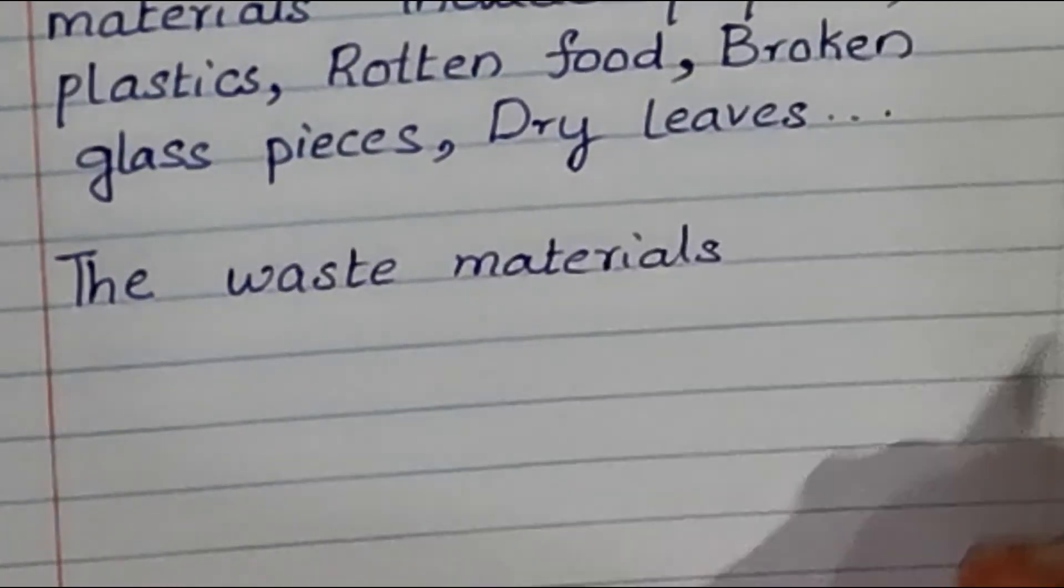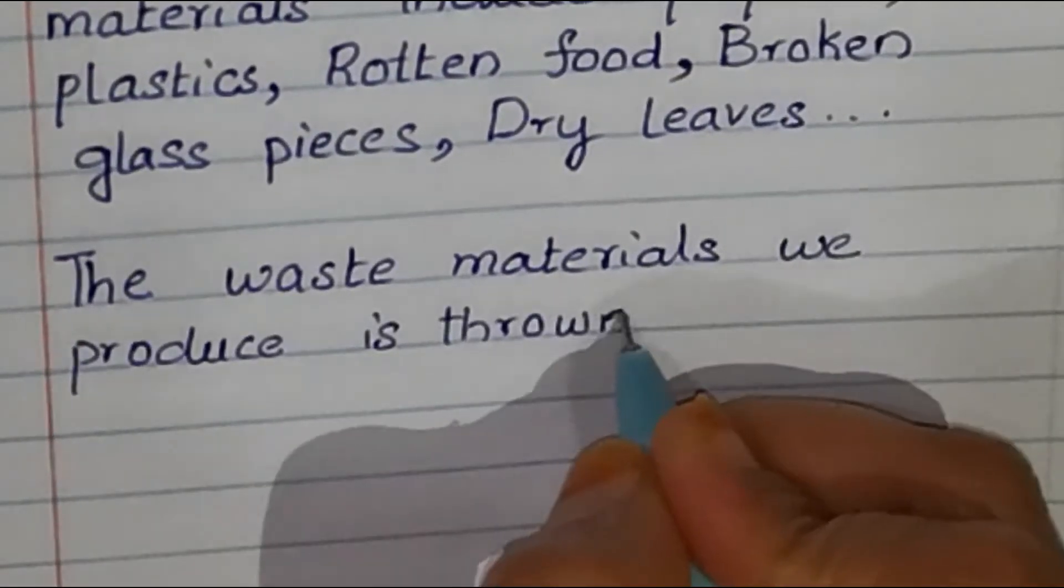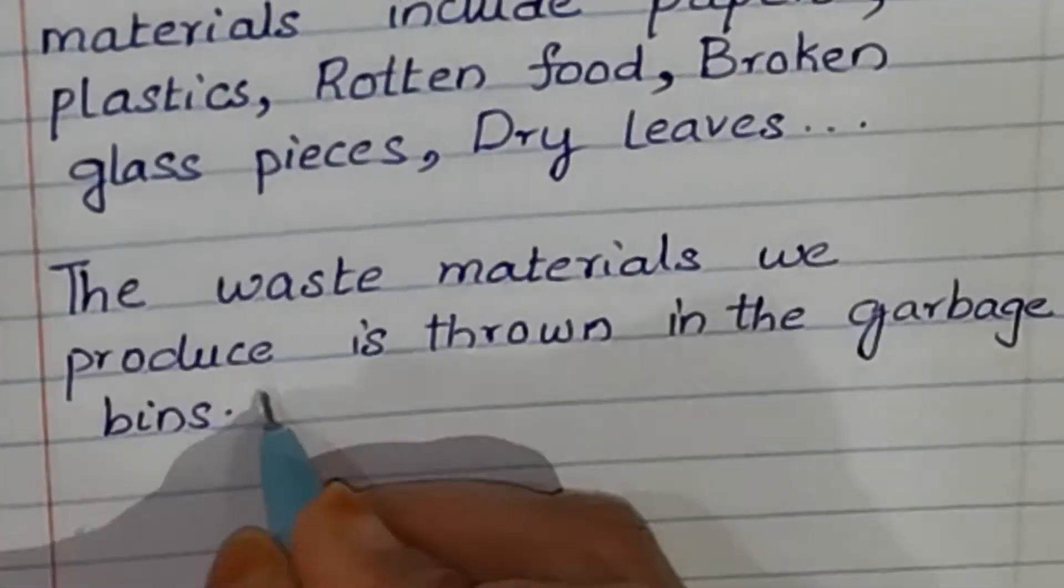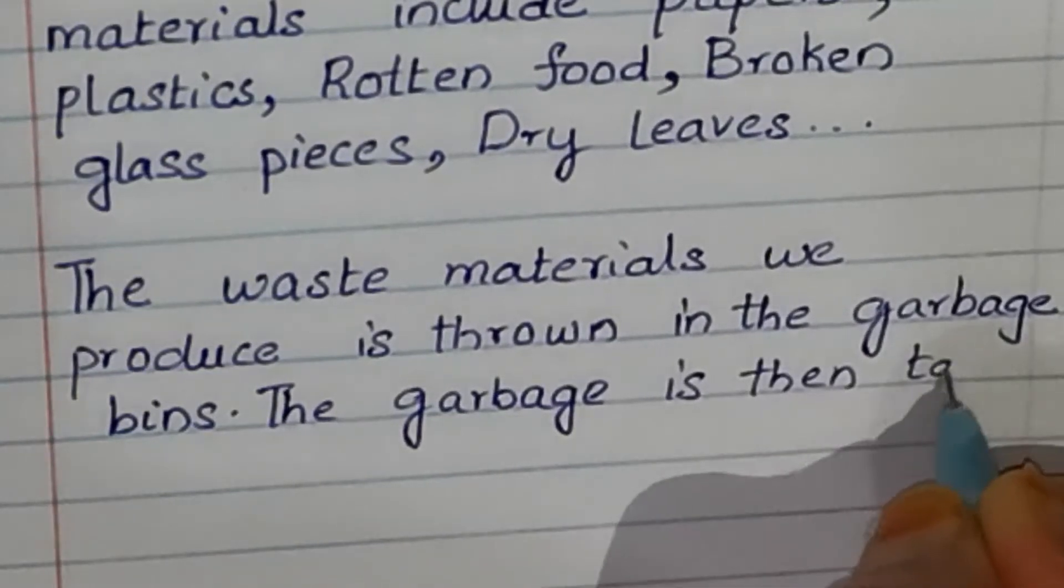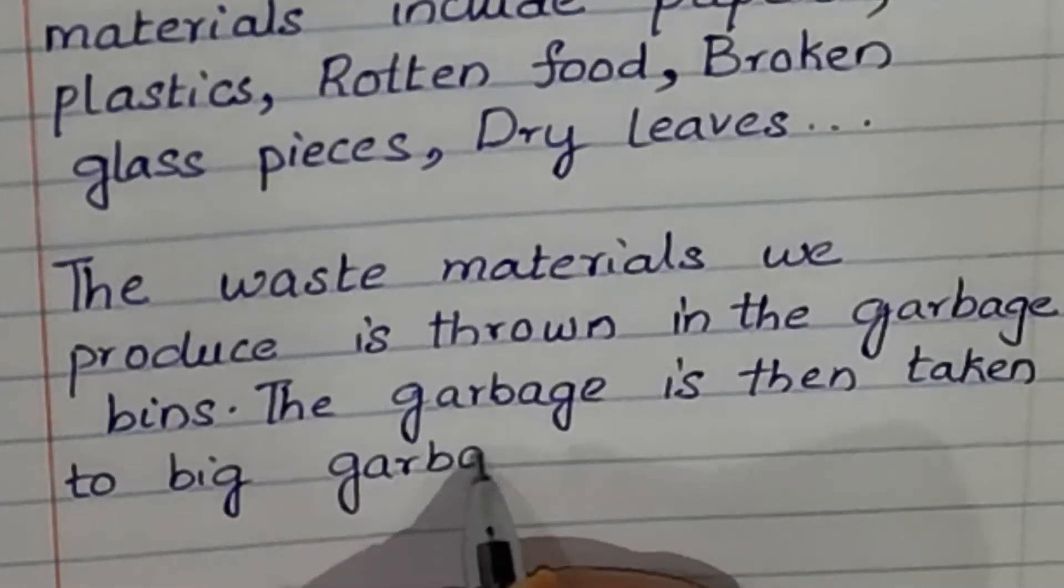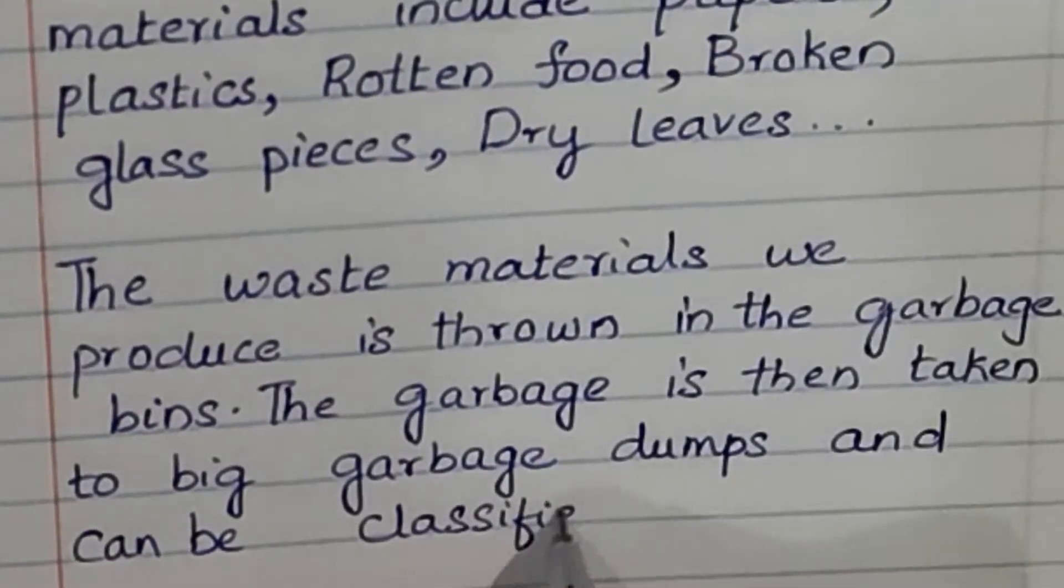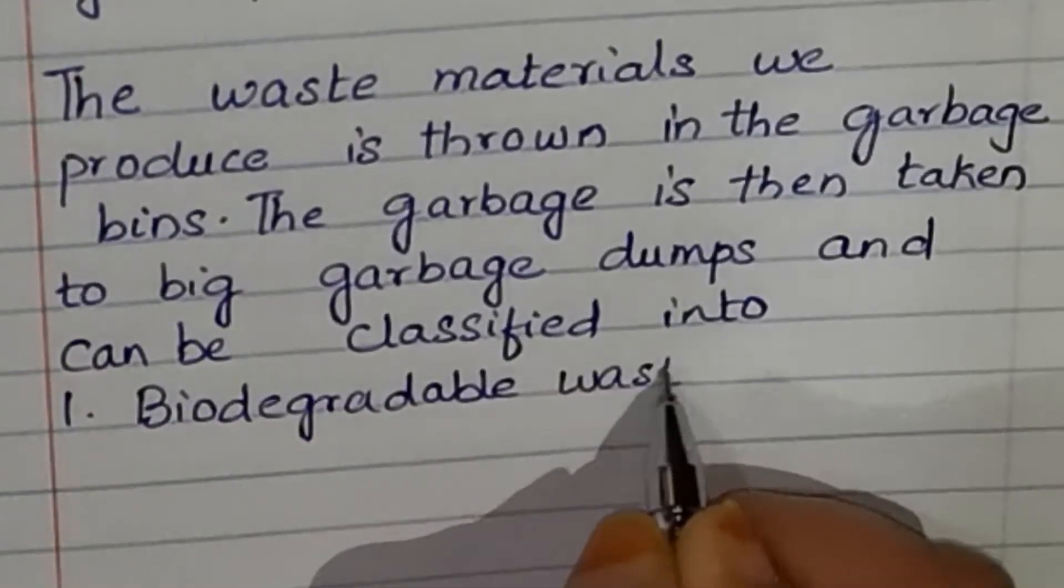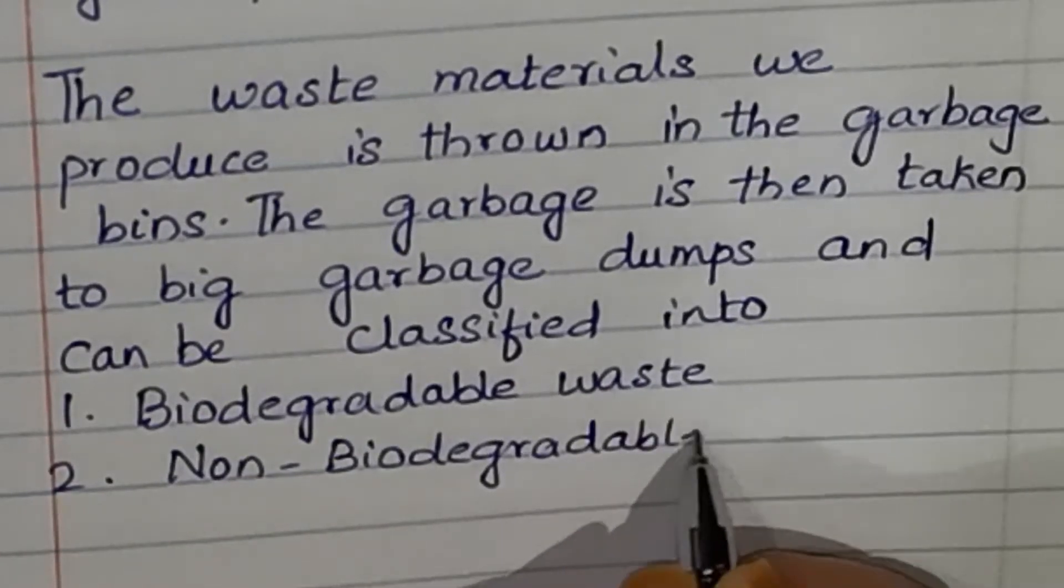The waste materials we produce is thrown in the garbage bins. The garbage is then taken to big garbage dumps and can be classified into number one biodegradable waste, number two non-biodegradable waste.